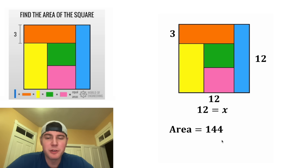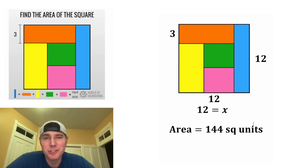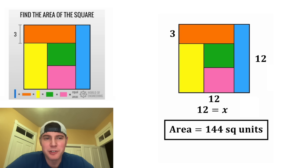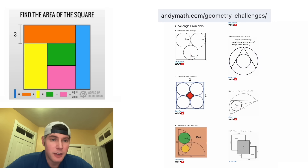Going back to our original square, X was the side length, so this square is a 12 by 12 square. The area is just 12 squared, and 12 squared is equal to 144 square units. This is the answer to our question — the square has an area of 144 square units. Let's put a box around it. How exciting!